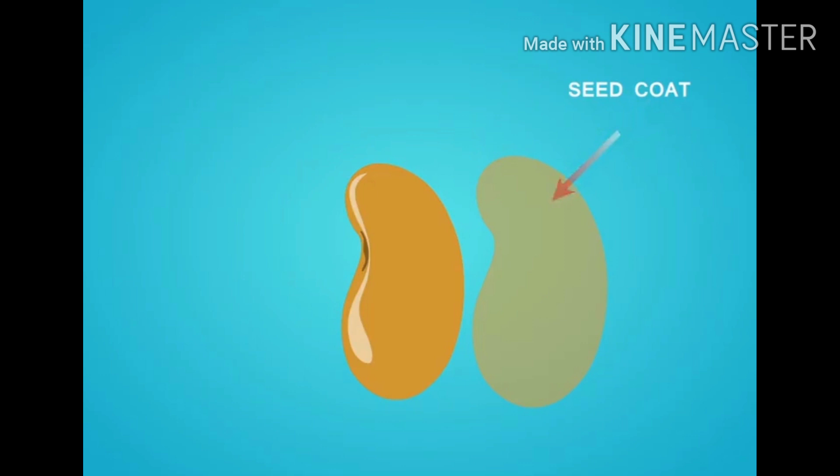The outermost layer of the seed is called a seed coat. It is a thin covering which protects the seed from drying. The seed coat has a tiny hole through which water enters the seed.